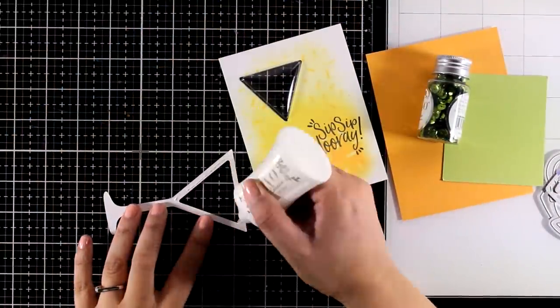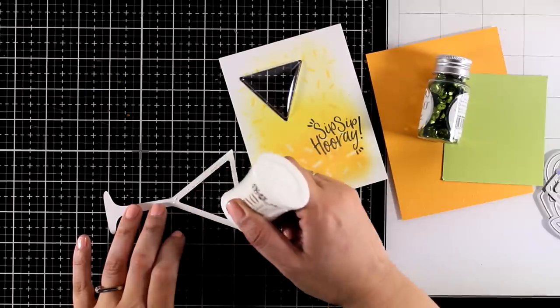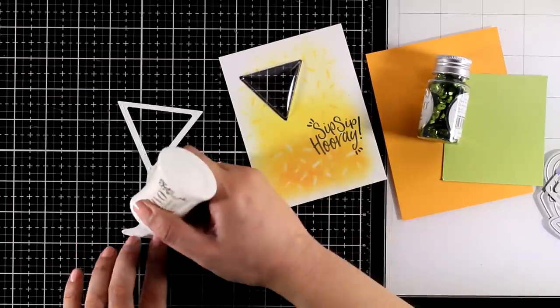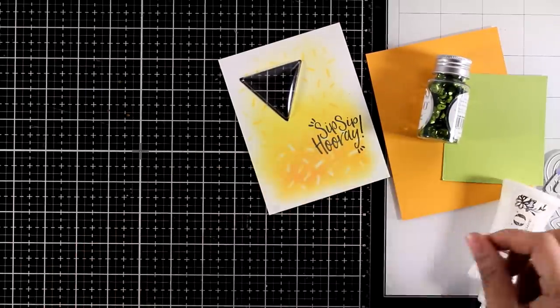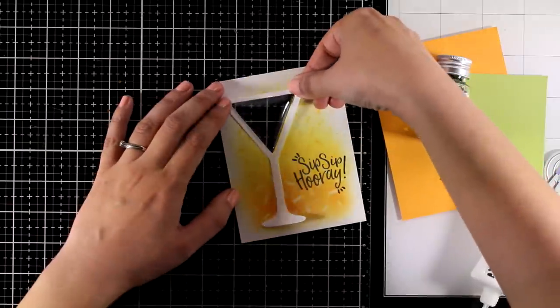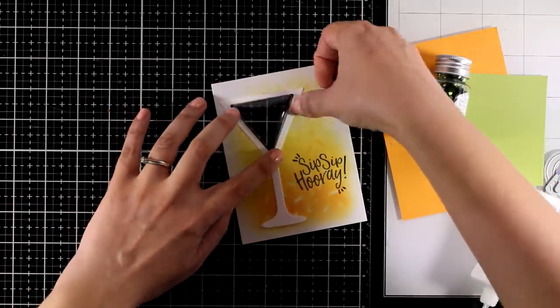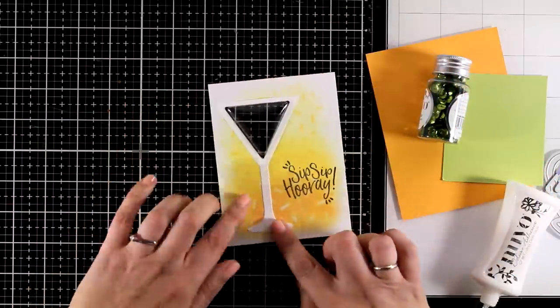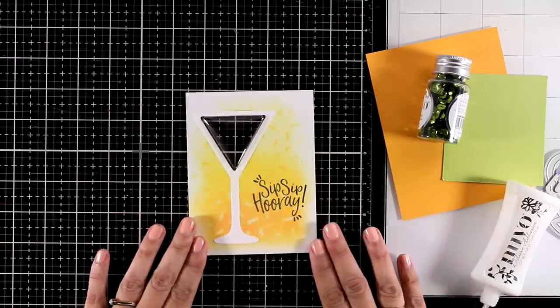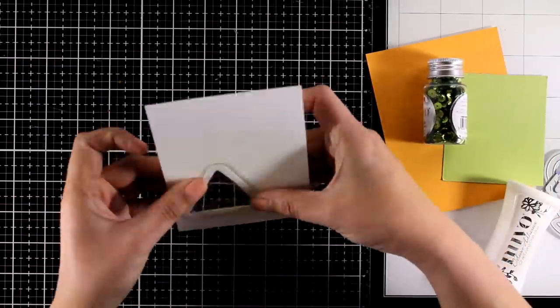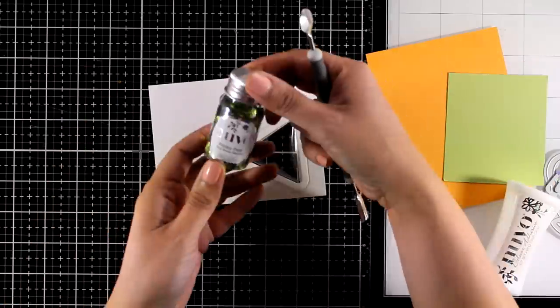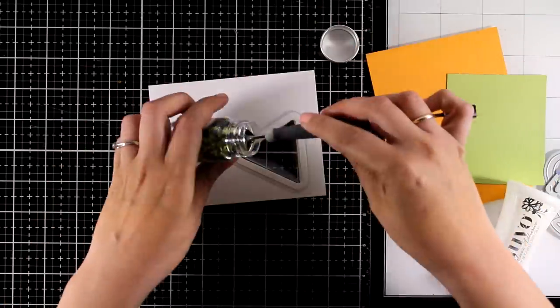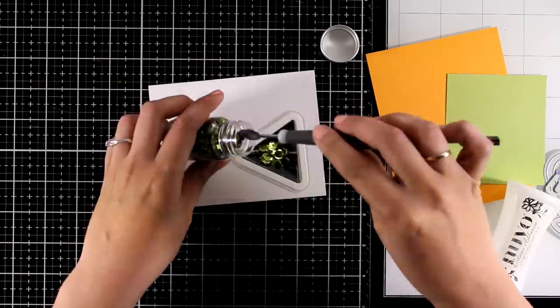Now for this one I'm working with the small cocktail glass. I used the two dies one inside the other and I just cut out a simple glass out of white cardstock. Of course it can be any color that you like. I am using glue at the back and I'm going to stick it on top. And for this one I'm going with a green cocktail just because it's going to contrast nice with the yellow background that I have.